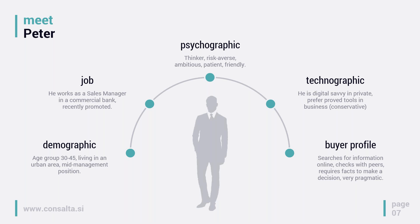There's also a new category I want to introduce called technographic. Peter is digitally savvy in private — he uses lots of apps, mobile devices, and gadgets. However, he's a bit more conservative in business since he works with a bank, which tends to be a more conservative organization. He's cautious about what tools and systems they select for the organization. By profile, he usually searches for information online, checks with peers, requires facts, and is very pragmatic when making a decision.